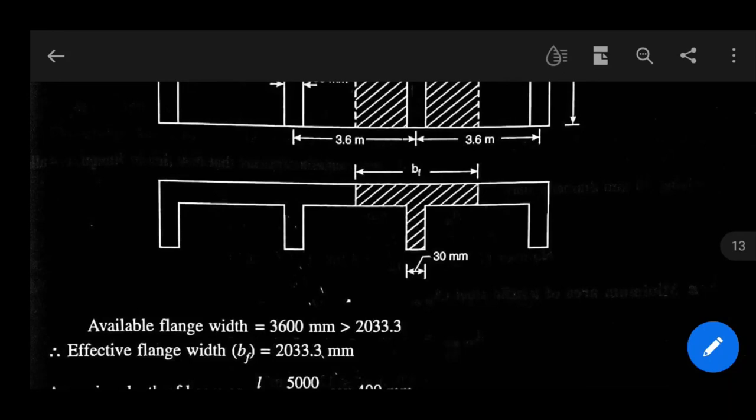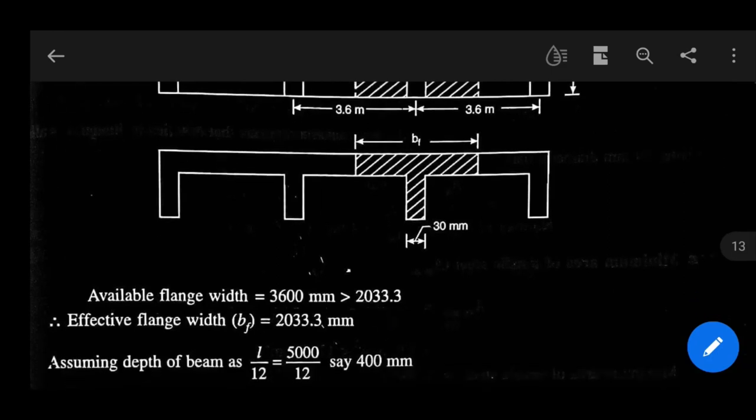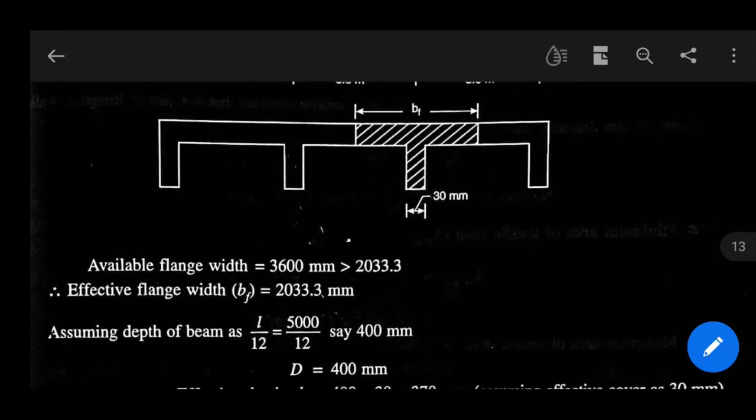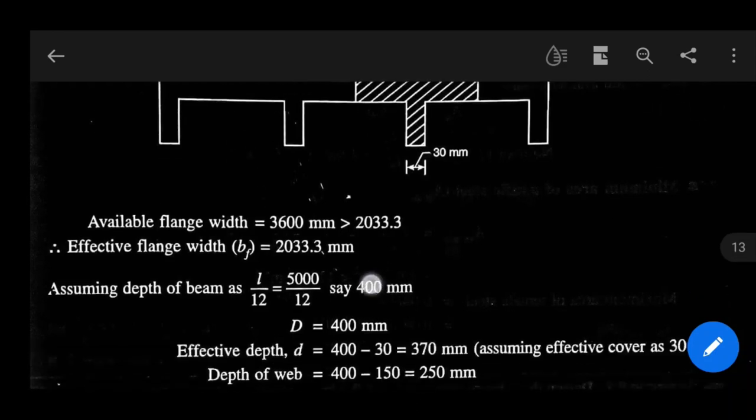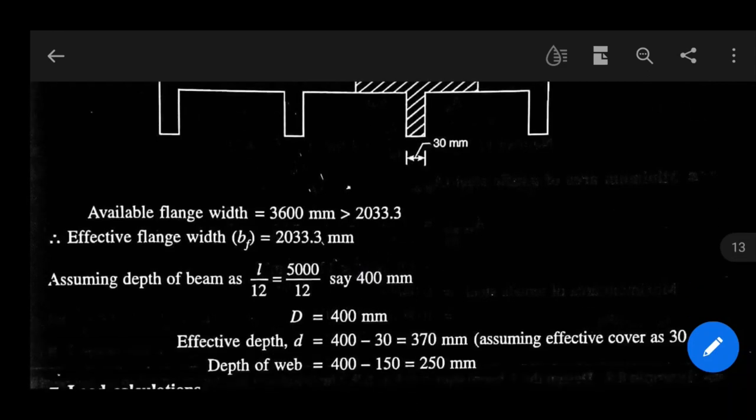Now available flange width is 3600 mm, which is greater than 2033.3. Now effective width of flange BF is 2033.3 mm. Now assuming depth of beam as L by 12, as for the assumption which is discussed in first lecture of T beam, which link is given below.